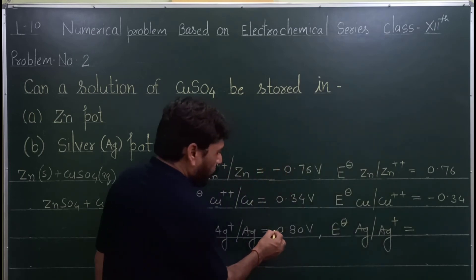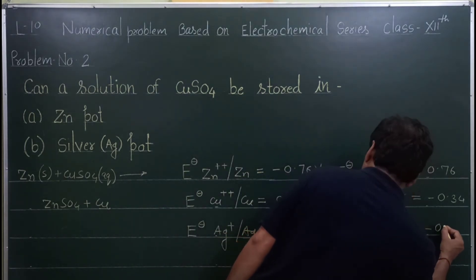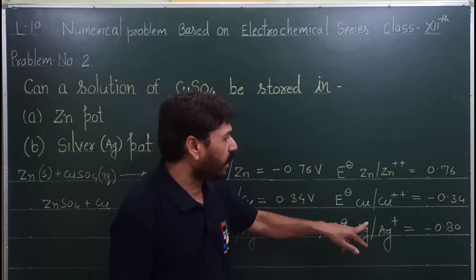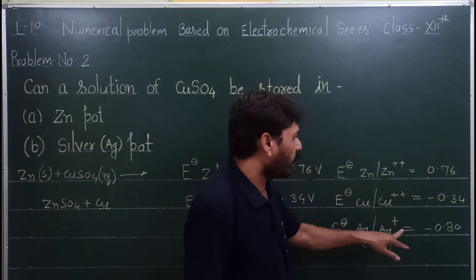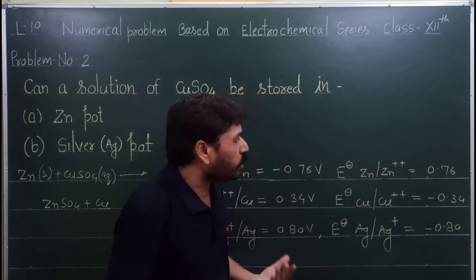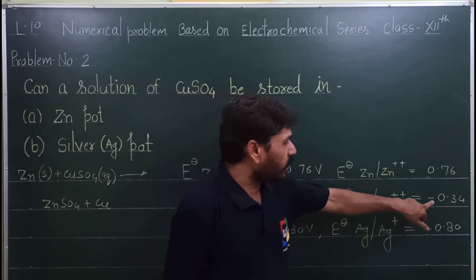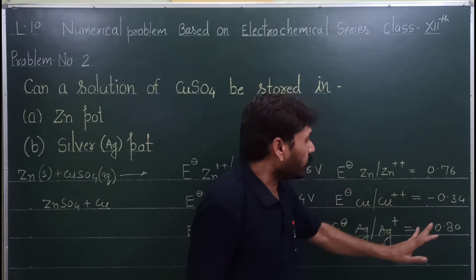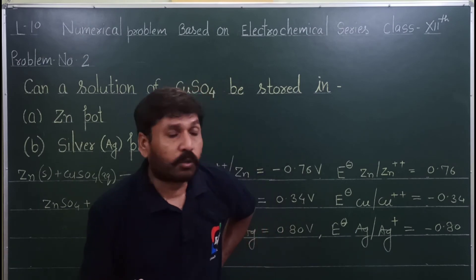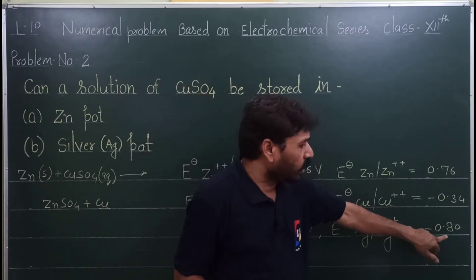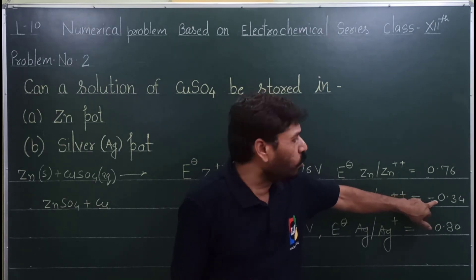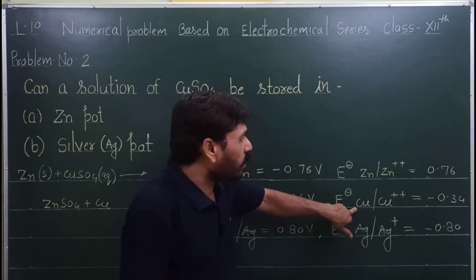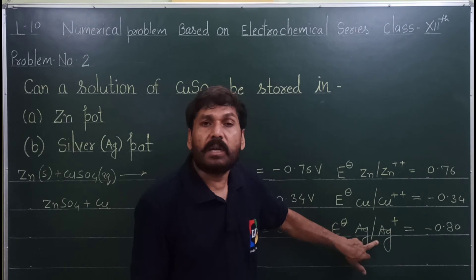Ag / Ag+ का oxidation potential: plus था तो minus हो जाएगा, यानि minus 0.80। अब copper और silver की comparison करते हैं — copper का oxidation potential minus 0.34 है और silver का minus 0.80 है। Minus की value जितनी कम होती है, oxidation potential उतना ज़्यादा होता है — तो copper ज़्यादा active metal है और silver उससे कम active है।